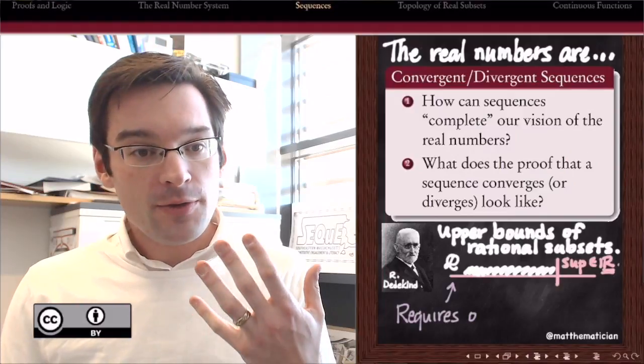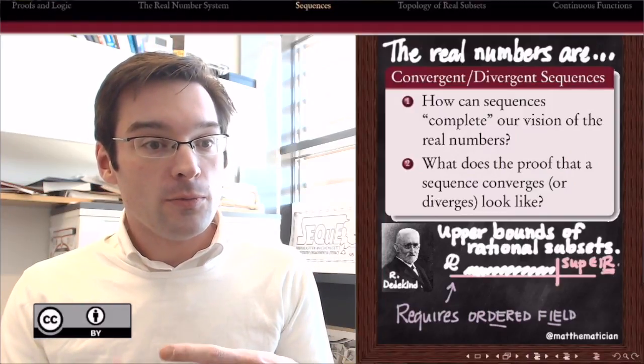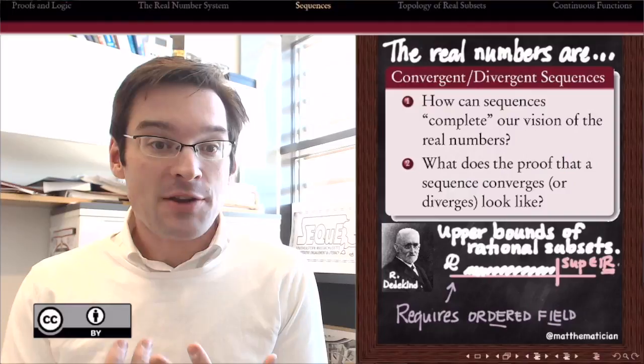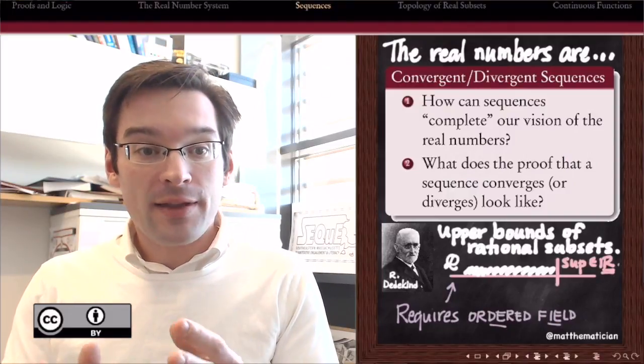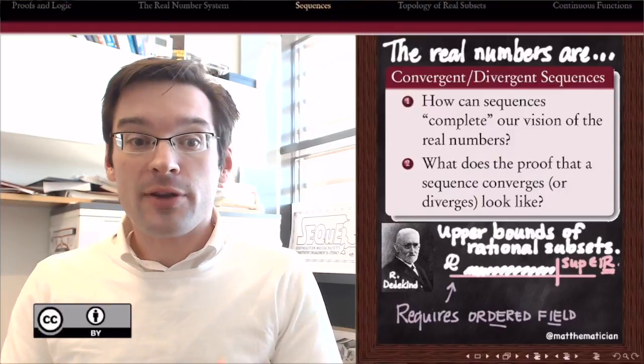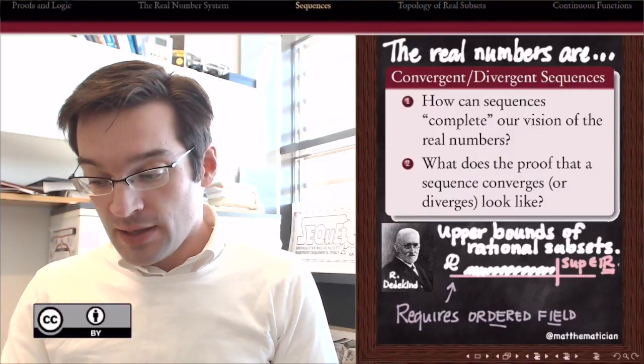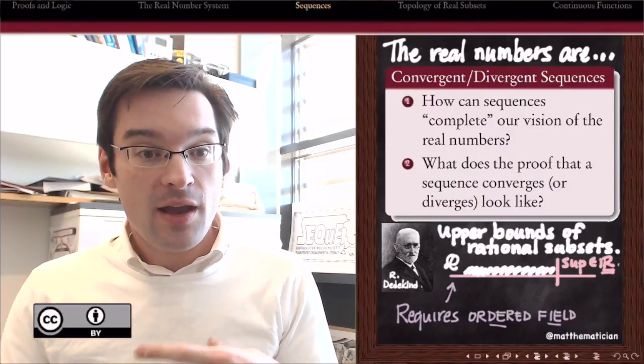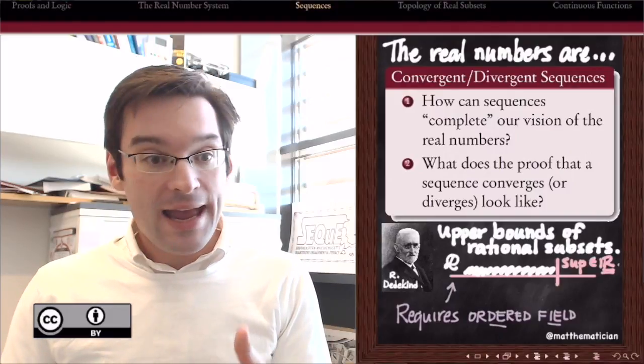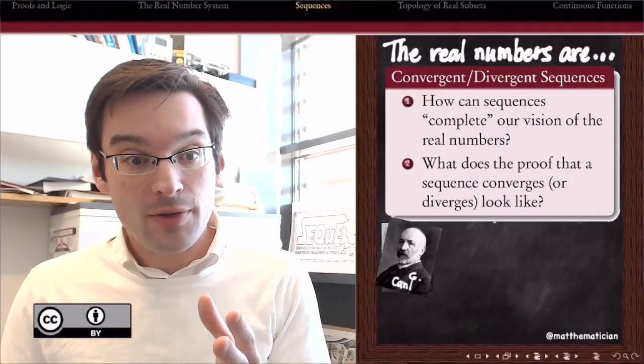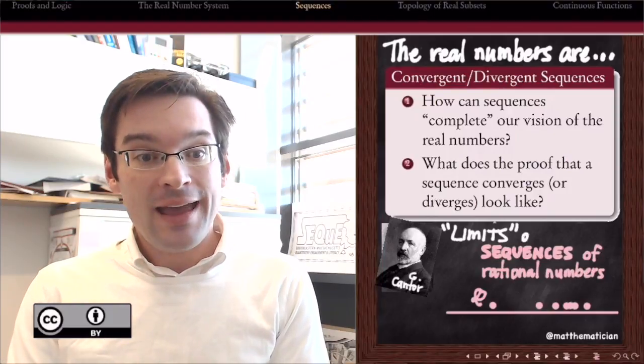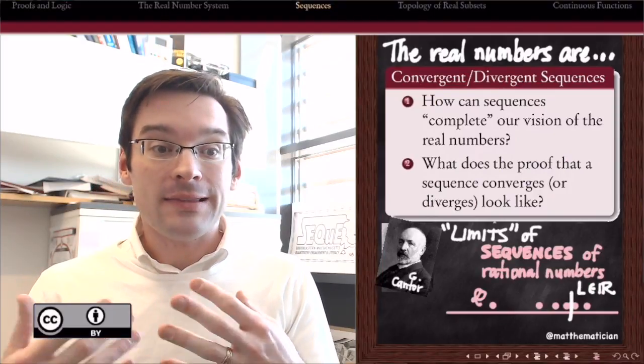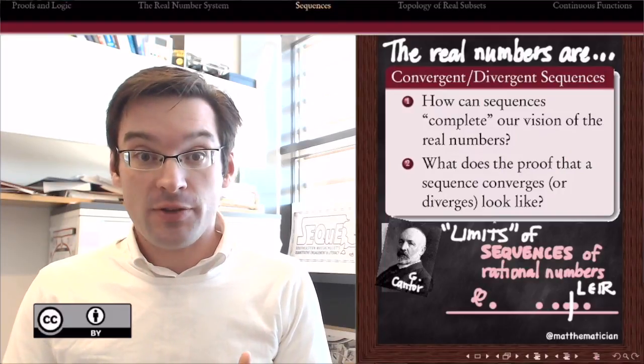What we want is a way to remedy the incompleteness of the rational numbers in a new way that can build the real numbers and can also be used to complete other kinds of incomplete systems. We can thank mathematicians like Augustin Cauchy and George Cantor for the method we're about to embark upon, which begins by studying sequences of rational numbers and asks: what are the limits of sequences of rational numbers?